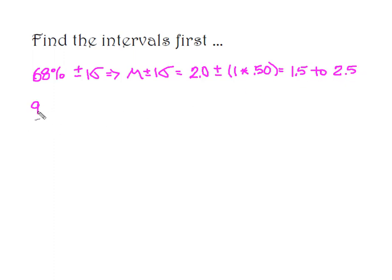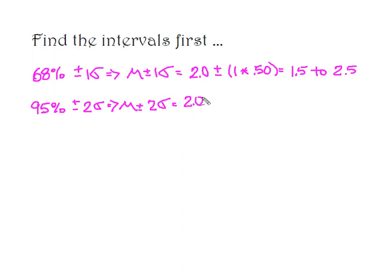The empirical rule also told me that 95% of my data is going to be located in an interval that is plus or minus two standard deviations from the mean. Starting at my mean of 2.0 and moving plus or minus two standard deviations, that gives me an interval from 1.0 to 3.0.